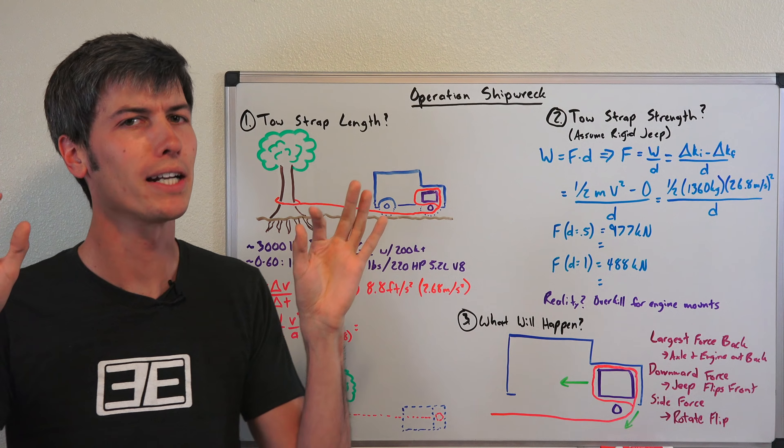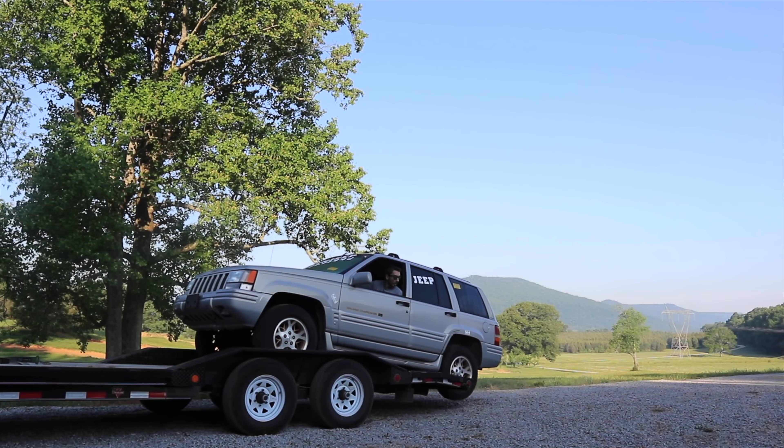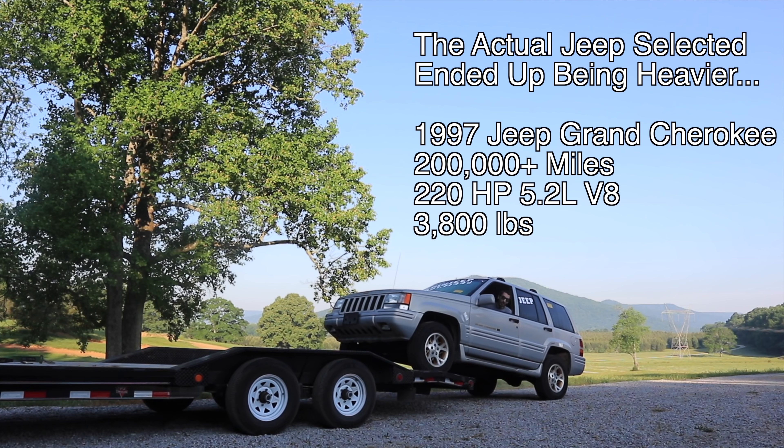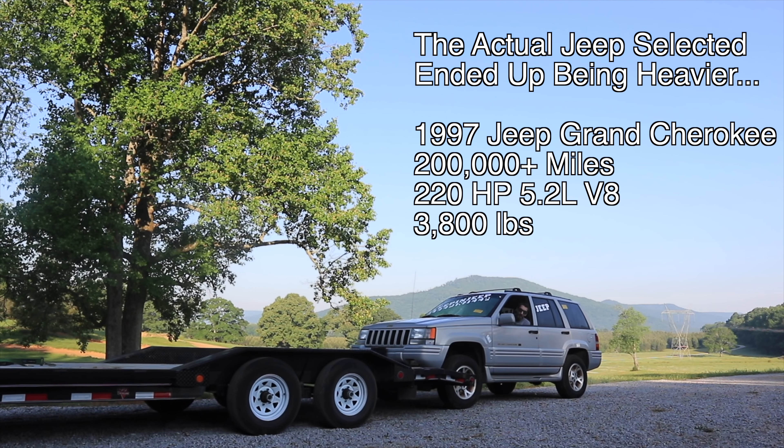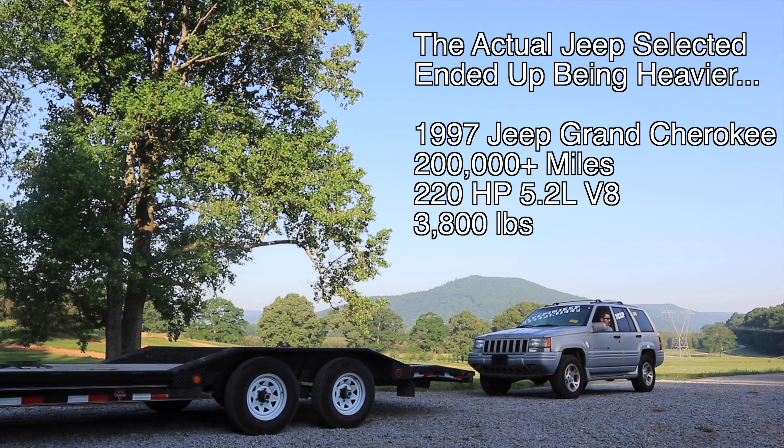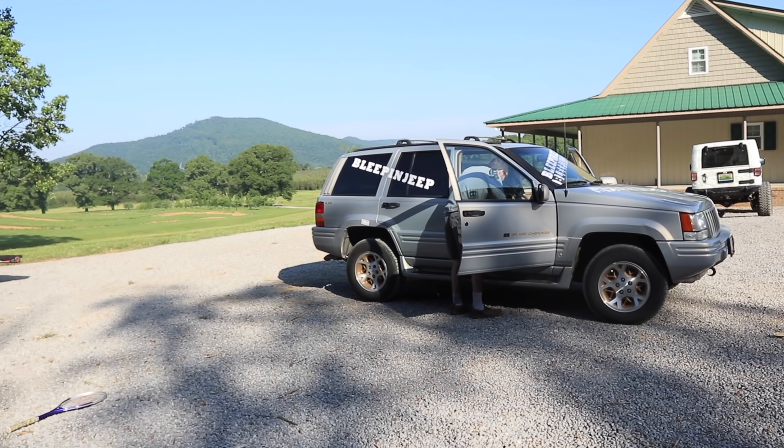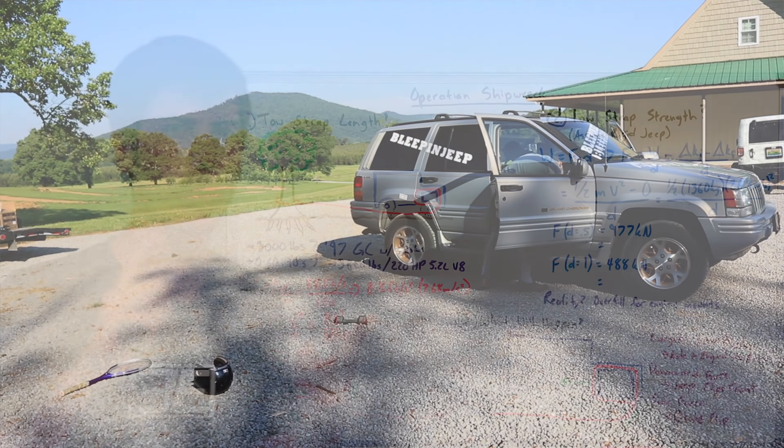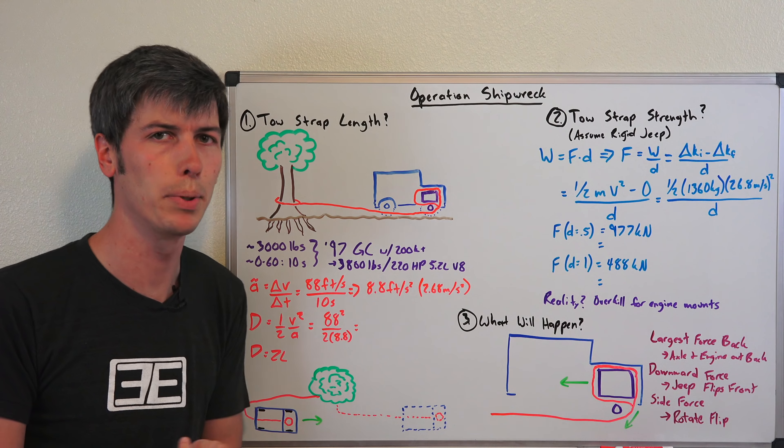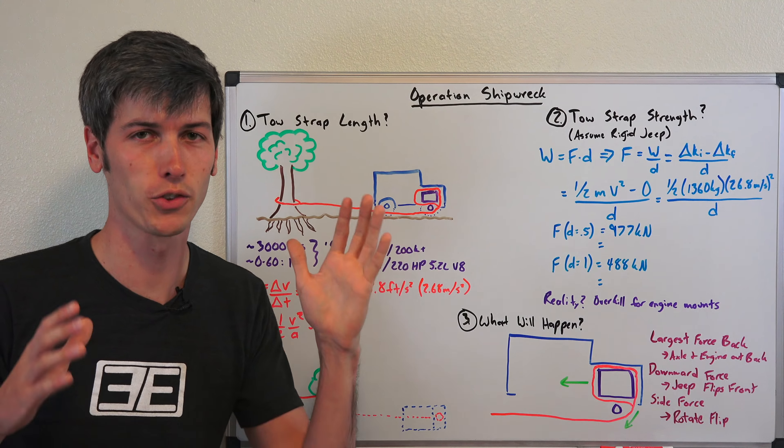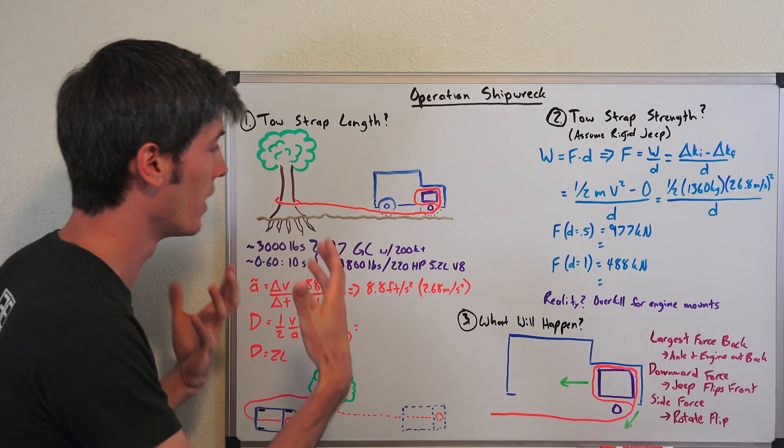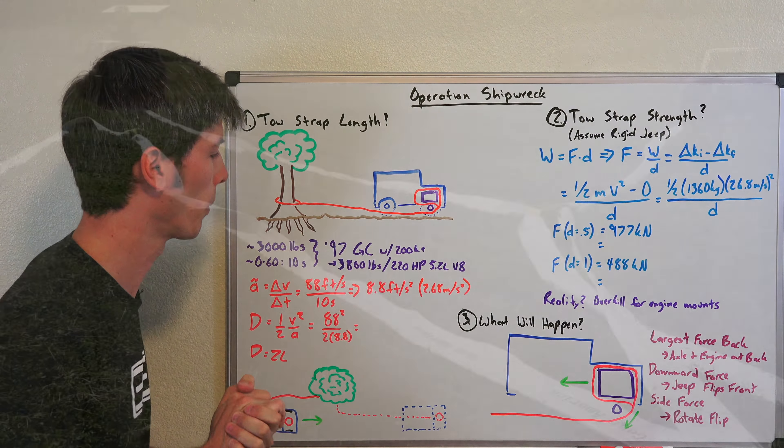Let's talk about 10 second cars. When Matt initially approached me about this idea, he said he was planning on getting an older Jeep that weighed about 3,000 pounds and would have a zero to 60 in about 10 seconds. That was a conservative estimate, so we make sure we have enough length in the tow strap. And so his questions for me were, how long does this tow strap need to be? And how strong does this tow strap need to be?